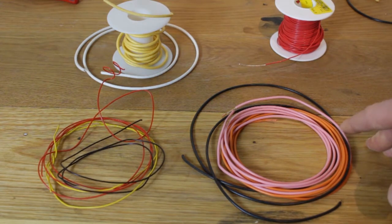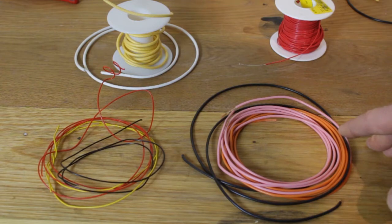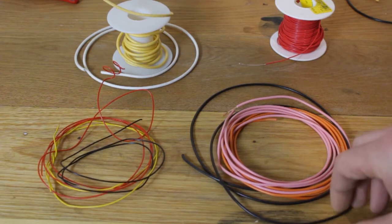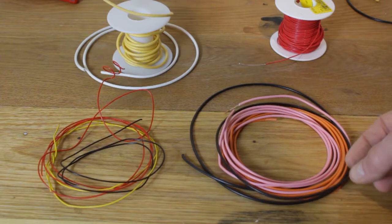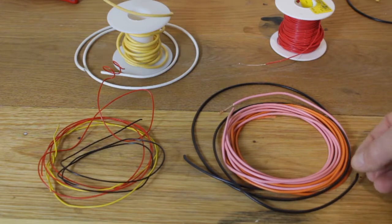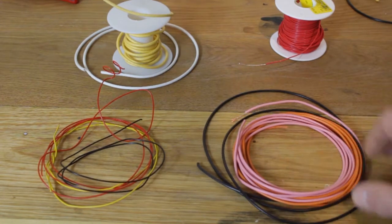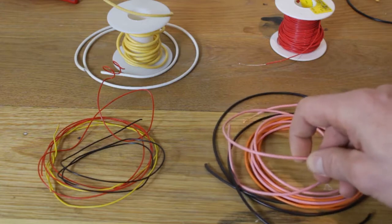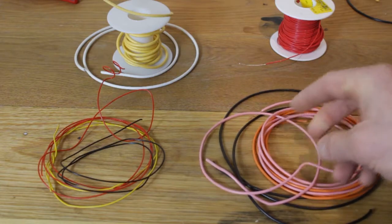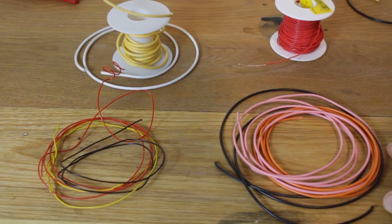This is the wire we supply with our kits for most of the hookups. It's 22 AWG or American wire gauge. It's got a thicker PVC insulation than normal PVC type wire, and it's pretty good for holding its shape because of the insulation. You can run it straight or in nice curves and it looks tidy.